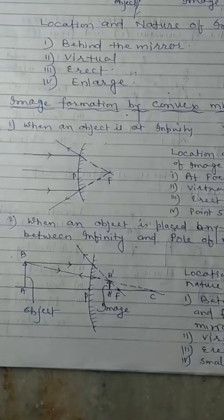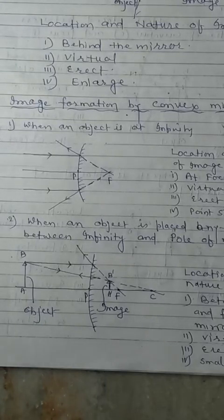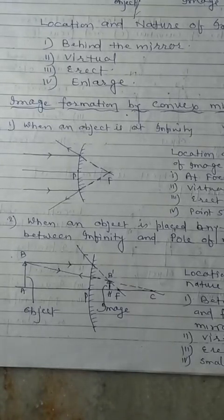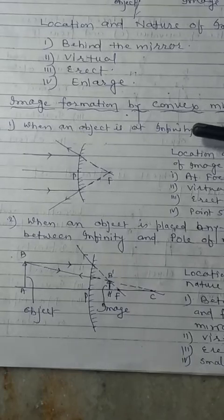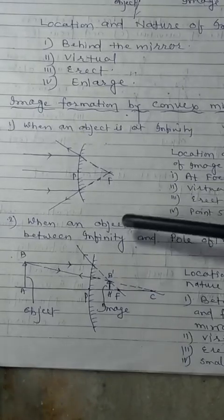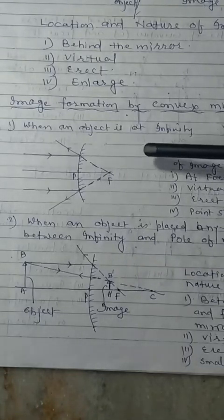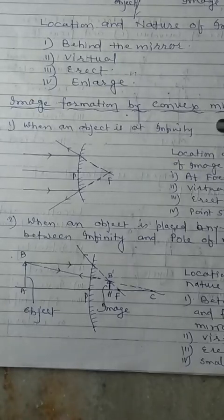Good morning children. Today we are continuing image formation by convex mirror. There are only two positions to obtain image formation. Number one: when an object is placed at infinity, and second, when an object is placed anywhere between infinity and the pole of the mirror. So first, when an object is at infinity.